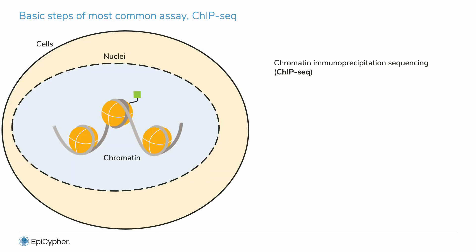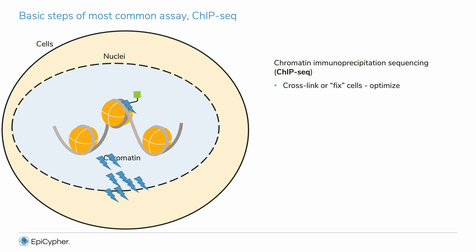Now we will go into the actual assay. ChIP-seq stands for chromatin immunoprecipitation sequencing. The first step is to cross-link cells, which stabilizes targets on chromatin. This step is important to optimize, since too much or too little fixation negatively impacts yields, background, and data quality.